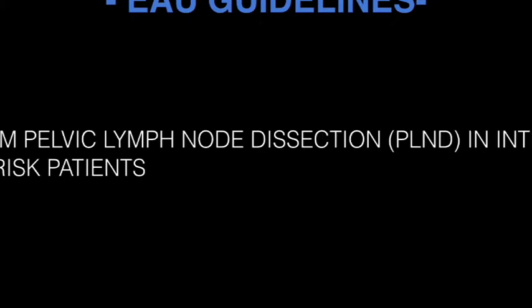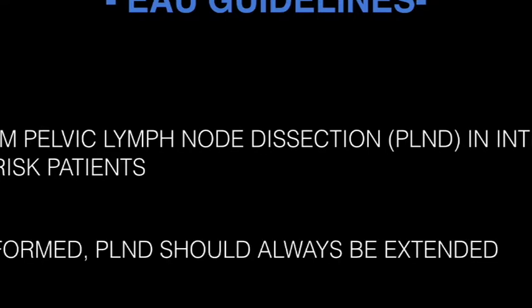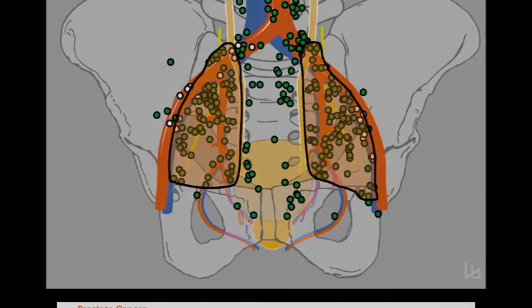According to the most recent EAU guidelines, pelvic lymph node dissection in prostate cancer is indicated in intermediate and high-risk patients. When performed, pelvic lymph node dissection should always be extended. According to our mapping study investigating the primary lymphatic landing sites of the prostate, the borders for extended pelvic lymph node dissection have been defined as follows.